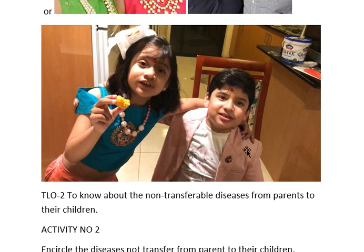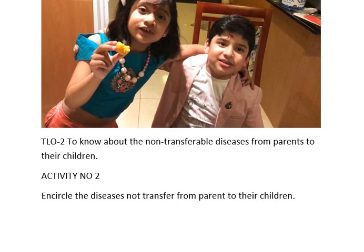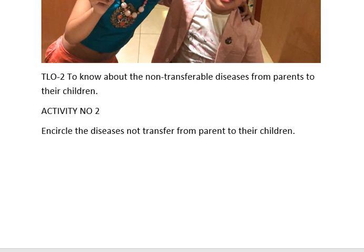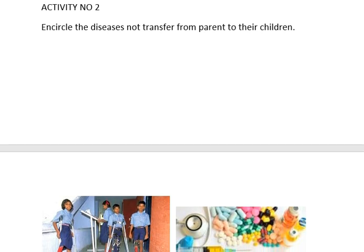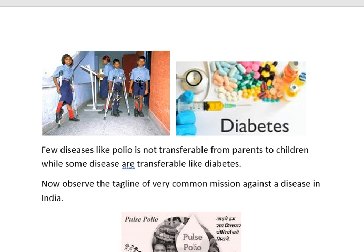Now let's come to the second TLO of this lesson: to know about non-transferable and transferable diseases from parents to their children. By observing these two pictures you can find that if a mother or father has polio, it is zero percent likely that the child will suffer from the same disease. But if the mother or father has diabetes, there are 70% chances that the child may suffer with diabetes in later life.